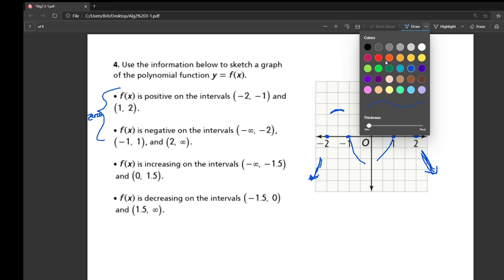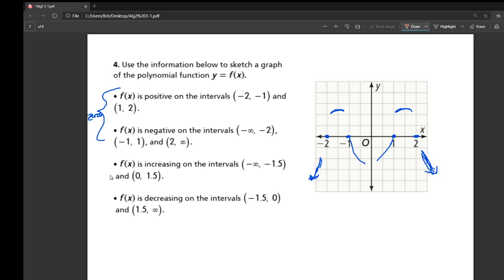So those zeros and the positive and negative intervals, they give us most of the shape of the graph. All that we need to do is figure out the turning points from the increasing and decreasing part. So these are your turning points.